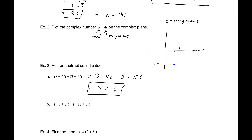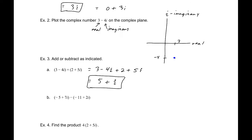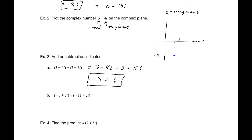Similarly with subtraction: subtract the real parts and subtract the imaginary parts separately. For the real parts, negative five minus negative eleven gives positive six. Subtracting the imaginary parts, seven minus two gives five. So the solution is 6 + 5i.